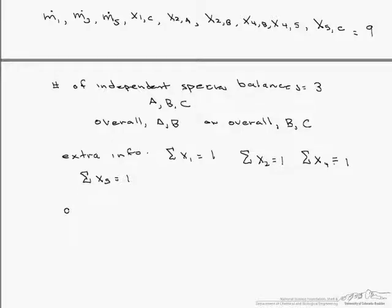So now let's look at this. We have 9 unknowns. We subtract from that our 3 independent species balances. We subtract from that our 4 pieces of extra information. And we end up with 2 degrees of freedom. That means in order to solve this problem we need 2 more pieces of information.